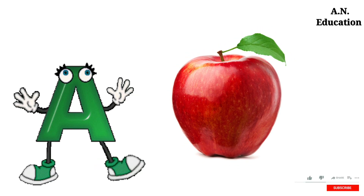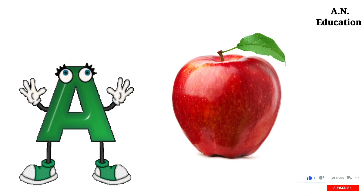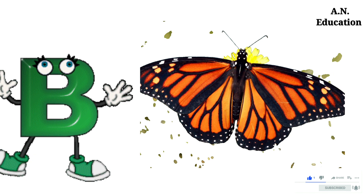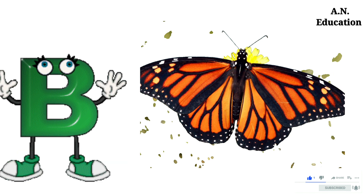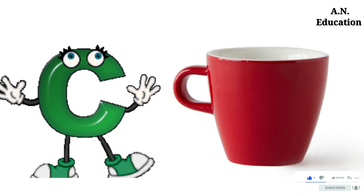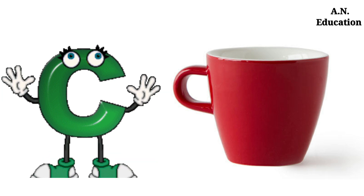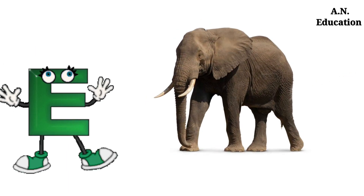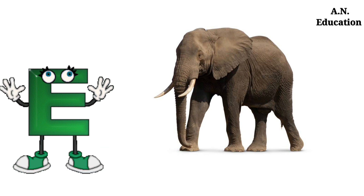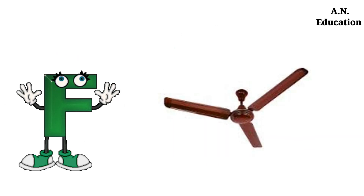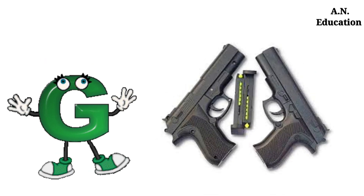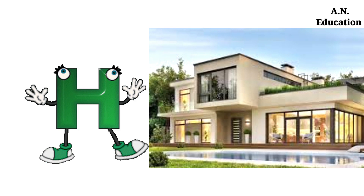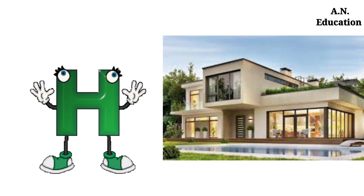A for apple, B for butterfly, C for curve, D for drum, E for elephant, F for fan, G for gun, H for house.